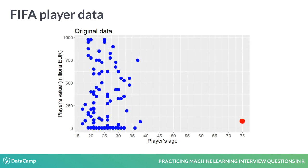Here's a scatter plot of 100 FIFA players' ages and their monetary value in millions of euros. We immediately notice the difference in the feature scales, which will be problematic for many machine learning algorithms when trying to compute distances, for example. To make things worse, there is an erroneous observation colored in red, which is clearly an outlier.